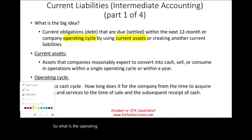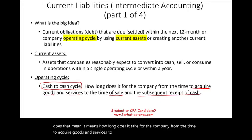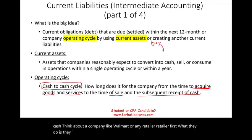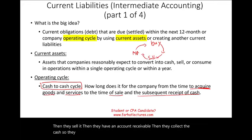The operating cycle is a cash-to-cash cycle — how long does it take for a company from the time it acquires goods and services to the time of sale and the subsequent receipt of cash? Think about a retailer like Walmart: they buy inventory, market it, put it on the shelf, sell it, have an account receivable, then collect the cash. How long is that cycle? For most companies, this cycle is less than a year.